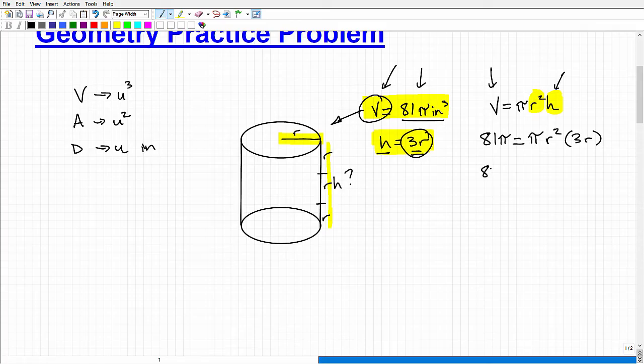So this would be 81 pi equals pi. R squared times 3 times R is going to be 3 times R cubed.